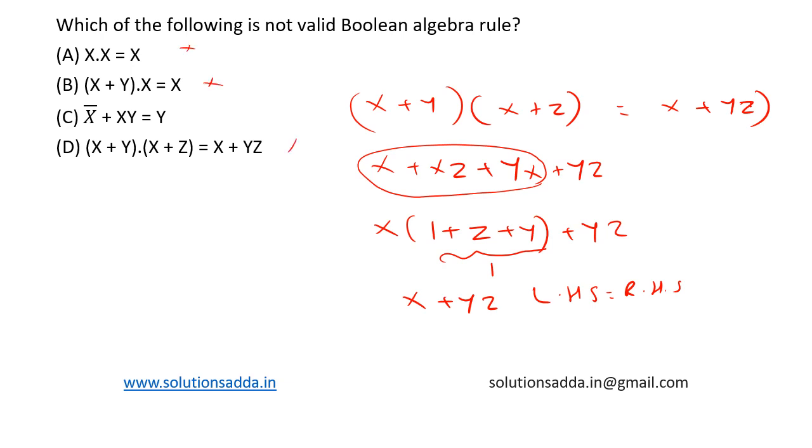So option A, option B, option D are all valid, and option C is not the valid Boolean algebra rule. So based on the question, option C is the right answer.